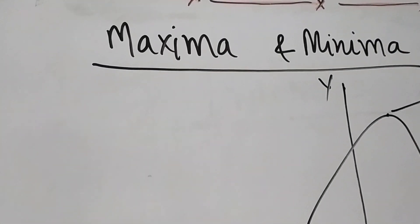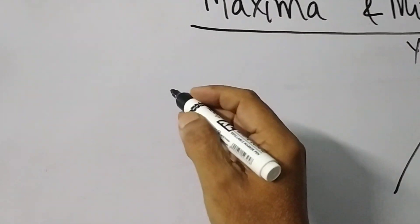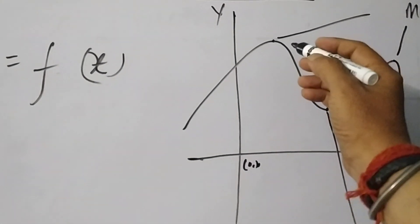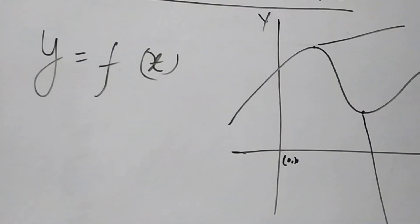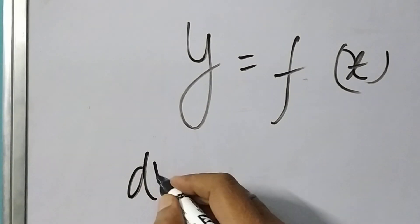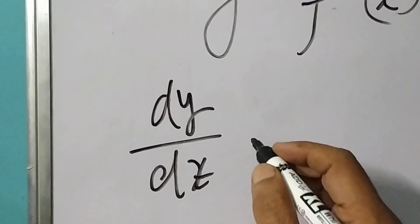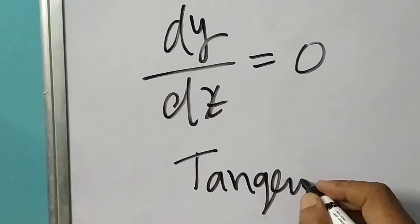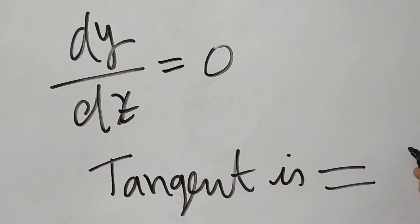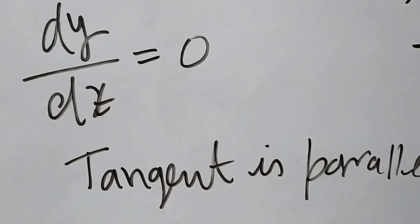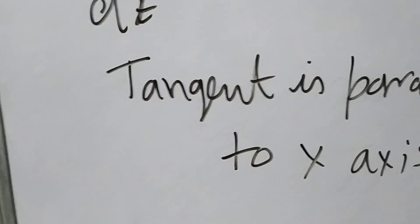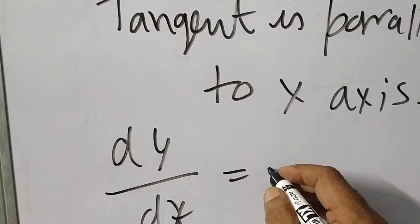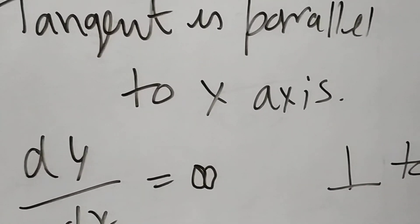But we have to write it in mathematical form. Suppose this graph is y as a function of x. How can we say that this point is maxima or minima in mathematical terms? We have to calculate dy by dx. If dy by dx is zero, that means the tangent — the gradient — is parallel to the x-axis. If dy by dx is infinite, then it is perpendicular to the x-axis.